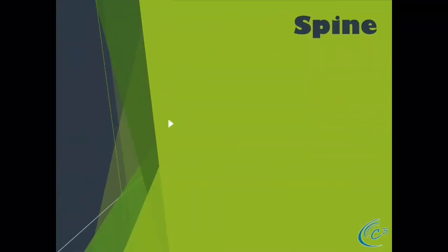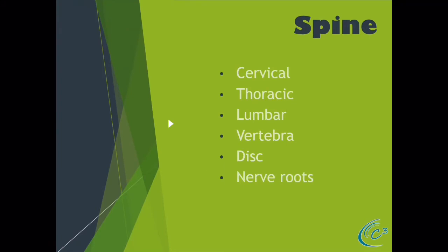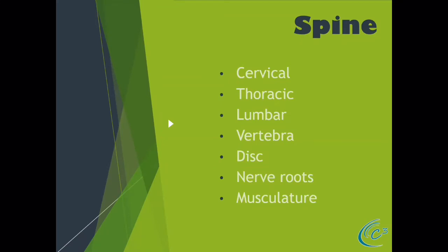So we talked about the upper extremity and the lower extremity. Let's talk about the spine. We have the cervical spine, the thoracic spine, and the lumbar spine. Every part of the spine contains vertebrae, discs, nerve roots, and musculature. It's crucial for you to understand exactly what level we're talking about, how that level correlates to the mechanism of injury, and how the findings on physical examination correlate to the reported pathology.